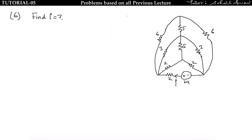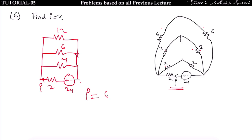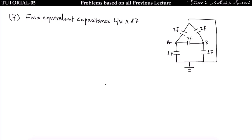In this question, we find the value of current. This is also a balanced Wheatstone bridge: 6 by 3 equals 6 by 3, and 3 by 2 equals 3 by 2. The 5-ohm resistance is therefore not needed and is open-circuited. Now find current I. The circuit is 12 in parallel with 6 in parallel with 4, giving I equals 6 amperes.